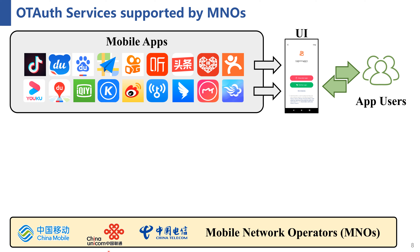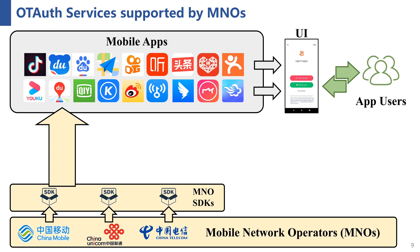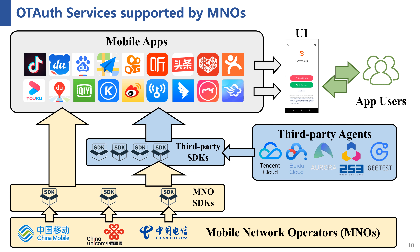There are two ways for an app to introduce MNO's service. The first one is to directly integrate the SDK developed by the MNO. In mainland China, there are three MNOs: China Mobile, China Unicom, and China Telecom. The second one is to integrate a third-party SDK. Such SDKs are developed by third-party agents and have integrated MNOs' SDKs, typically including other authentication functions such as SMS one-time password or WeChat account authentication.